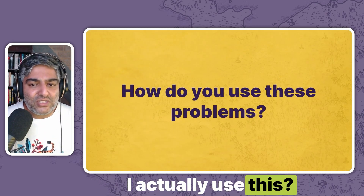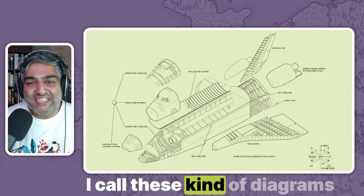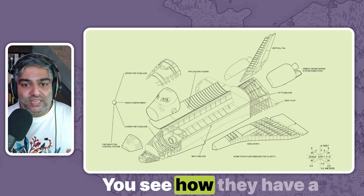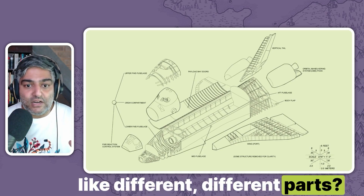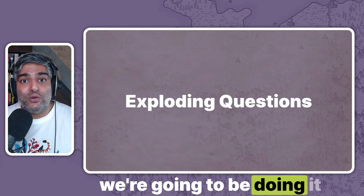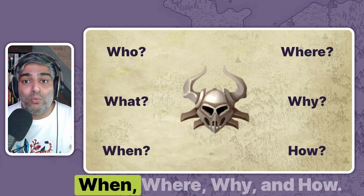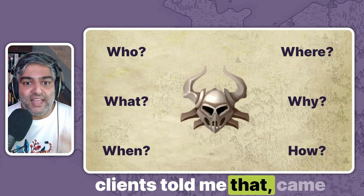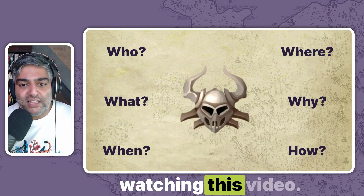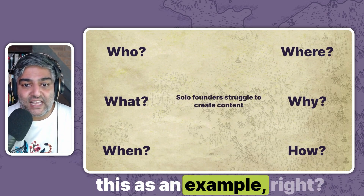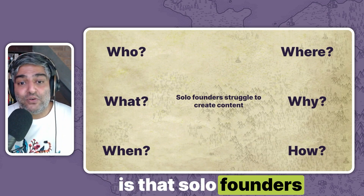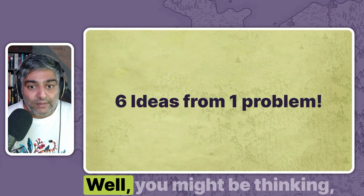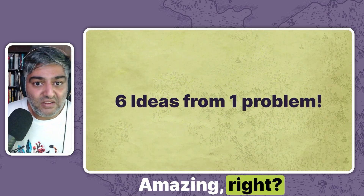Then you might be thinking, how do I actually use this? The answer comes in what I call exploding diagrams — because one, I think that is their actual name, and two, I always imagine that's how things would explode. You're going to be doing the same thing for those problems, and we're going to be doing it with exploding questions: who, what, when, where, why, and how. I used to call this exploding Aristotle, because apparently Aristotle — one of my coaching clients told me — came up with these questions. So thank you, Aristotle, if you're actually watching this video. One of the problems that my audience faces is that solo founders struggle to create content. When you apply Aristotle's questions to this particular problem, you get about 60 ideas. Ideas are good, 60 is amazing.